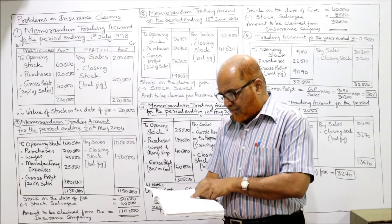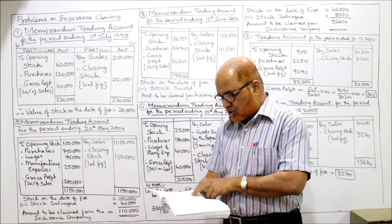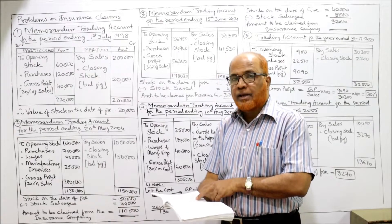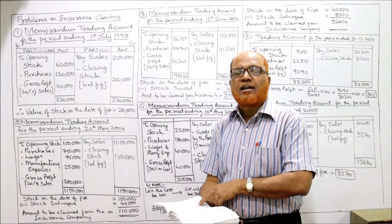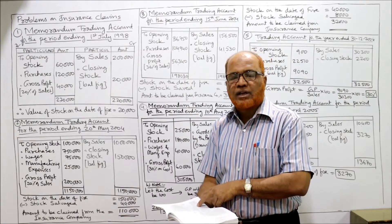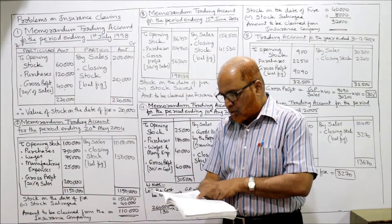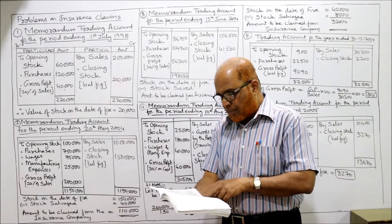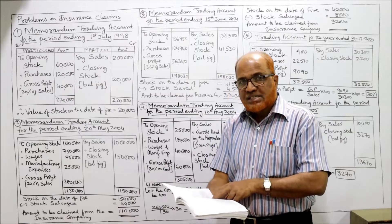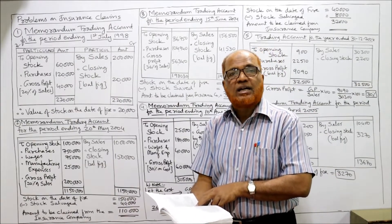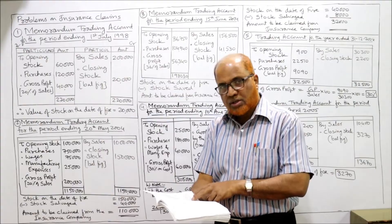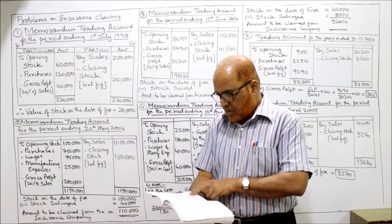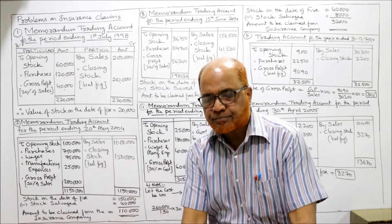Fire broke out on 1st July 1998, destroying the complete stock. Stock on 1st January 1998 was 60,000 (opening stock), meaning the business follows the calendar year — beginning 1st January, ending 31st December. Purchases up to the date of fire: 1,20,000. The rate of gross profit is 20% on sales. Sales up to the date of fire amounted to 2 lakh.